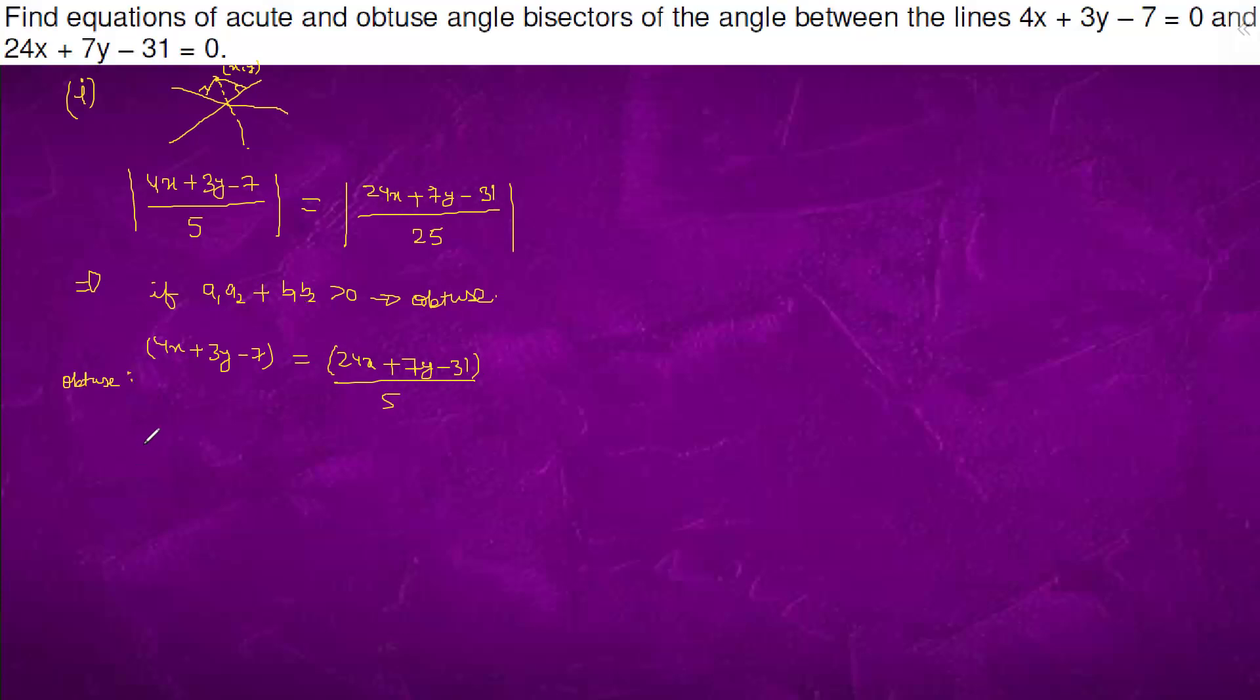We solve this: 20x plus 15y minus 35 equals to 24x plus 7y minus 31. This will come out to be 4x minus 8y plus 4 equals to 0. You can say that it is x minus 2y plus 1 equals to 0. This is obtuse.